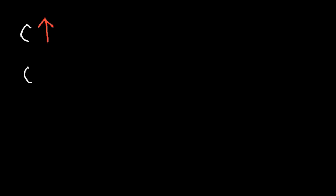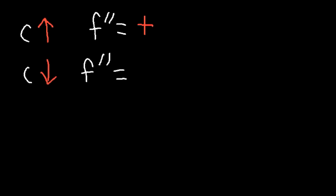When is the function concave up, and when is it concave down? A function is concave up when the second derivative is positive. The function is concave down when the second derivative is negative. When it's concave up, the first derivative is increasing in value. And when it's concave down, the slope is decreasing in value.